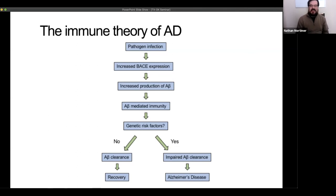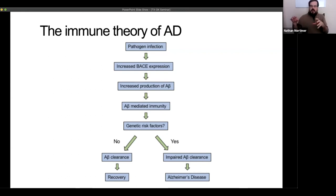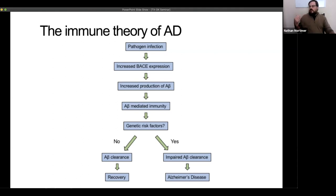The theory is that following infection, the host upregulates the beta enzyme — called BACE — which does the beta cleavage leading to production of amyloid beta. Amyloid beta then goes out and performs immune functions that are good, helping the host overcome the pathogen infection. But then you hit a branch in the road: if you're able to effectively clear the A-beta that was made as part of the immune response, you recover and everything is fine. If you're not able to clear it — and many of the genetic risk factors for developing Alzheimer's disease are actually part of this A-beta clearance mechanism — it hangs around in the brain building bigger and bigger plaques, eventually causing damage and leading to Alzheimer's disease.